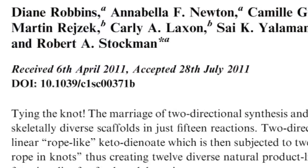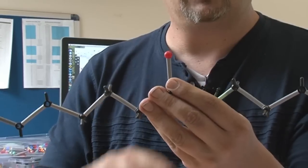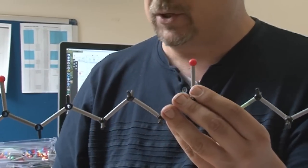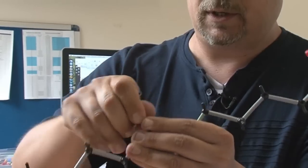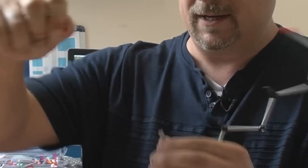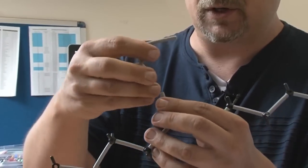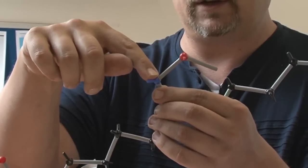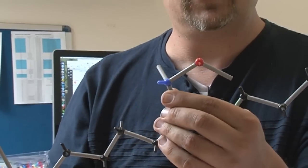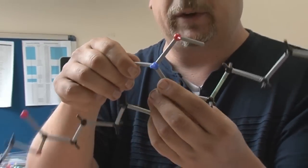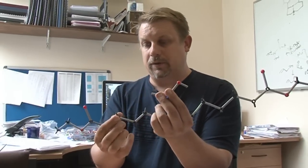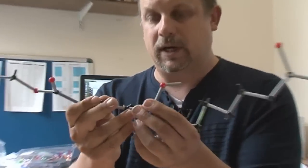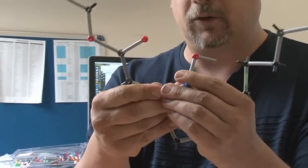So what we do is we take this central functionality, the ketone in the middle, and we can convert that into a whole range of different species. In this case, I'm just going to take that off. There goes the oxygen. We do a condensation reaction with a hydroxylamine. That's an amine and an oxygen. And what this can do is this can now react with one of these alkenes, and that forms a ring.